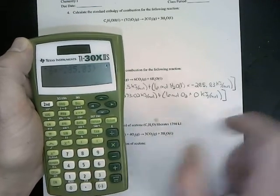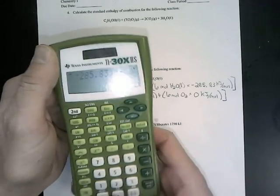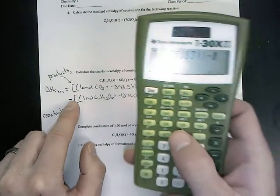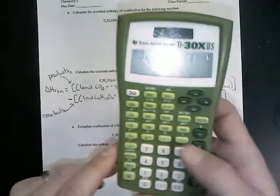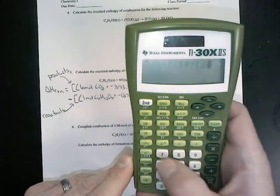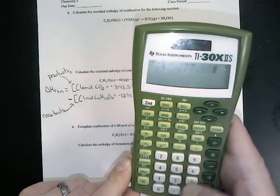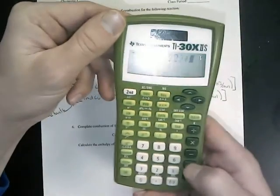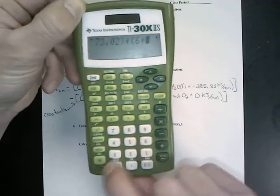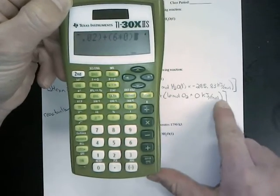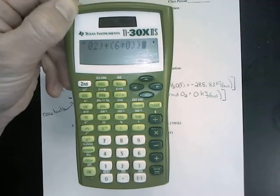And then to close out the bracket, we put another parenthesis. We subtract all of that business from bracket, which we represent by a parenthesis, the actual parenthesis 1 times negative 1,273.02 plus parenthesis 6 times 0. So we close out the parenthesis and we close out the bracket with another double set of parenthesis.